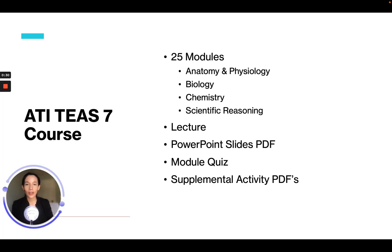This course is going to consist of 25 modules that are going to break down according to the different sections of the ATI TEAS 7 science portion. We're going to cover anatomy and physiology, biology, chemistry, and scientific reasoning.